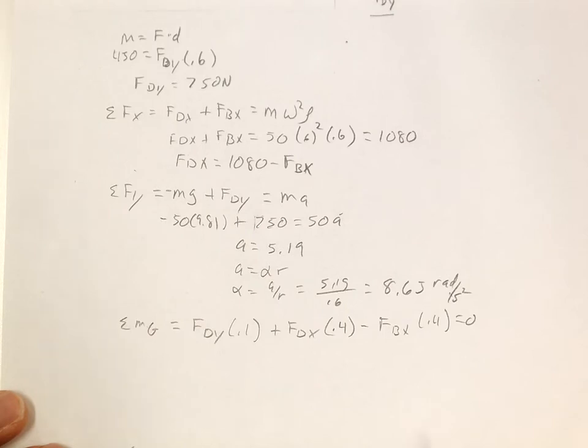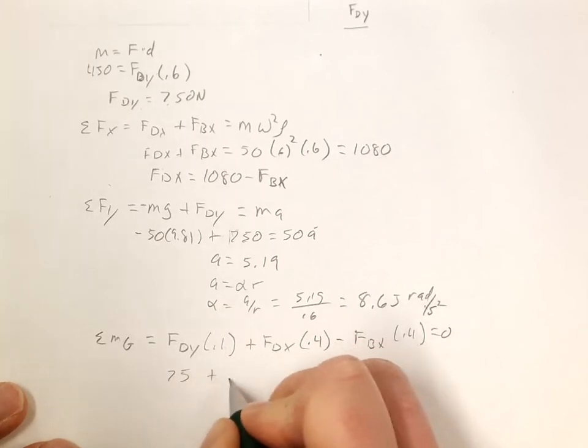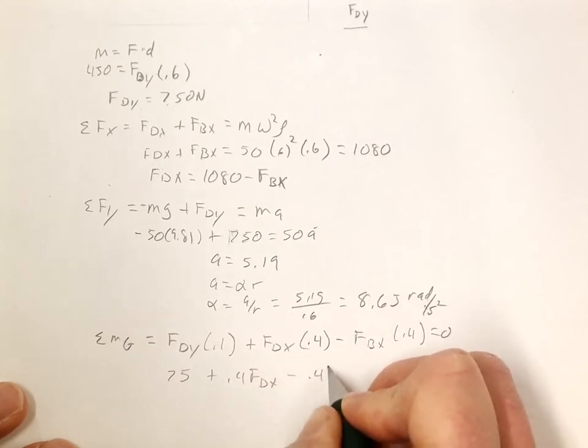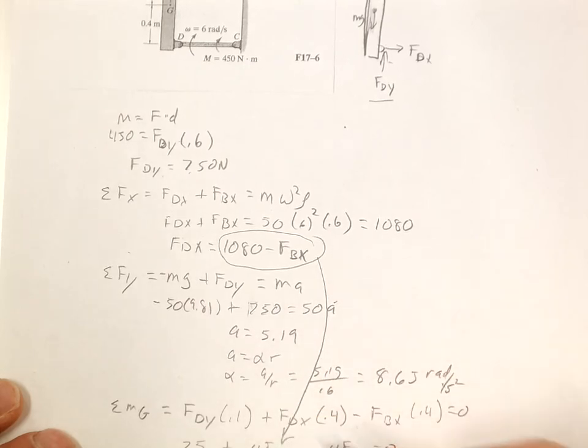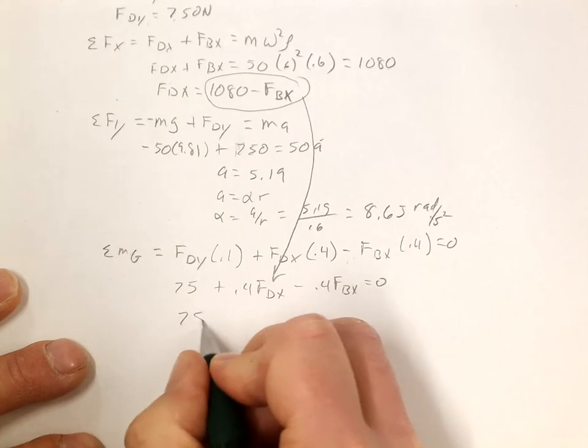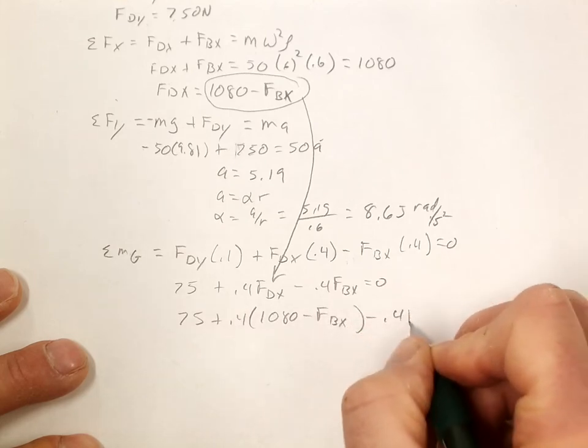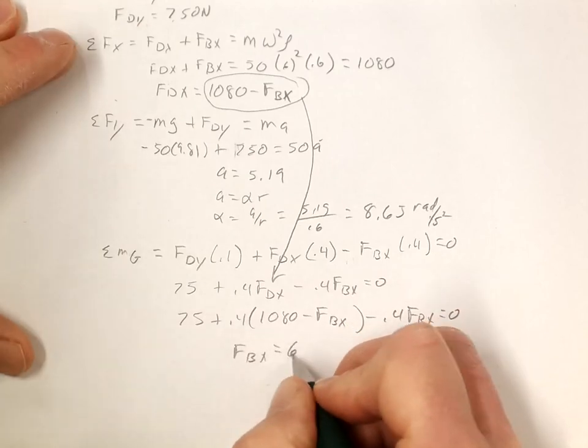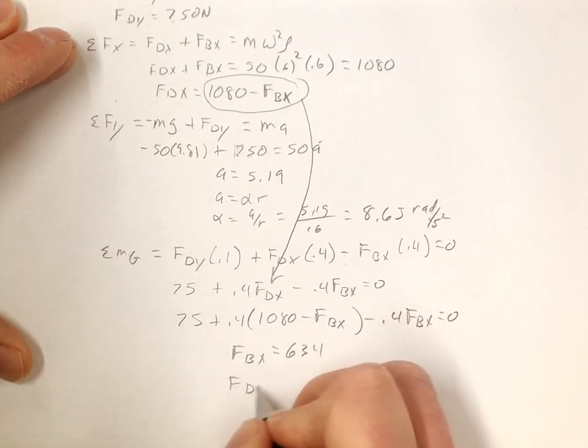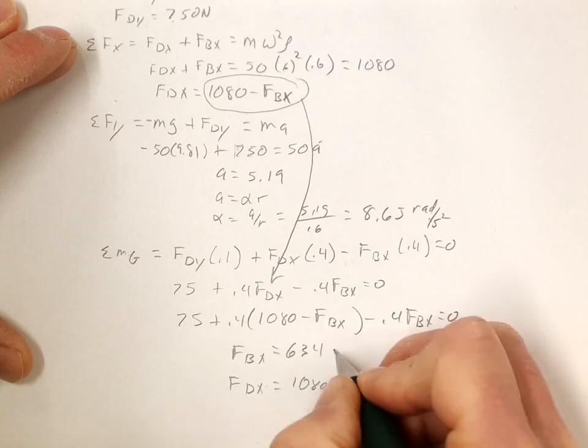We know FDY is 750, so 750 times 0.1 is 75. 0.4 FDX minus 0.4 FBX equals 0. Let's take this and substitute it in. So 75 plus 0.4 times 1080 minus FBX minus 0.4 FBX equals 0. And FBX equals 634. So FDX equals 1080 minus 634 equals 446, and they're both newtons.